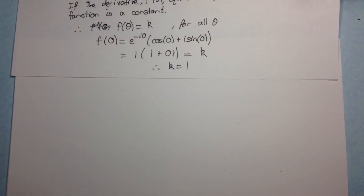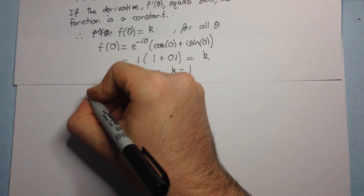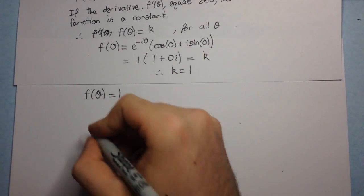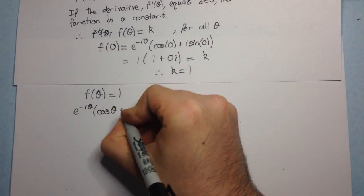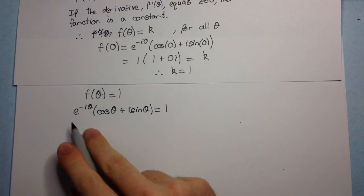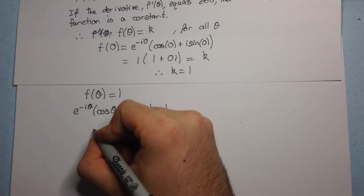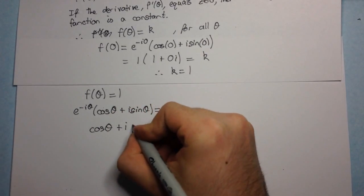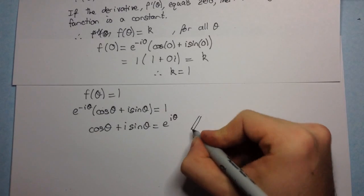Okay. All right. Now, if k is equal to one, then f of theta is equal to one. All right, what's f of theta? f of theta is e to the negative i theta, cos theta, plus i sine theta. That's equal to one. Now, I can multiply both sides by e to the positive i theta. And I get, so it'll cancel with this side, cos theta plus i sine theta is equal to e to the i theta. And that concludes our proof.